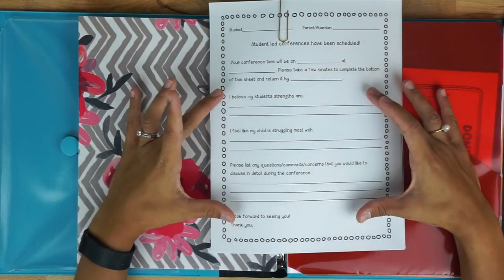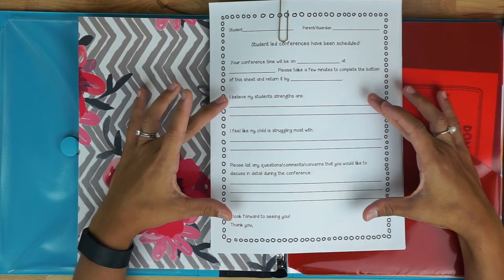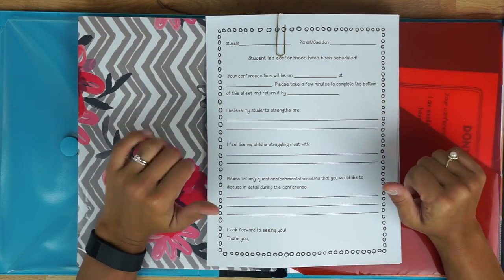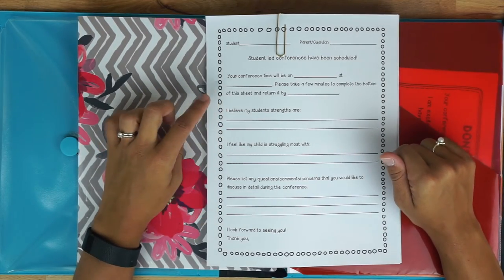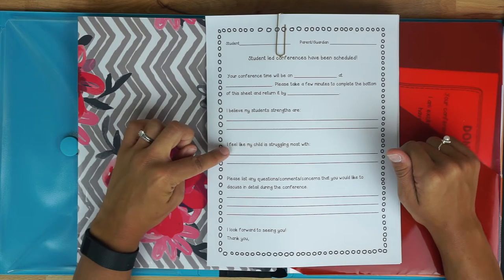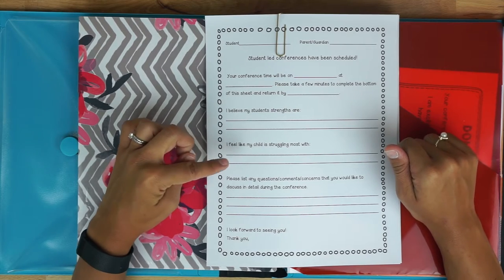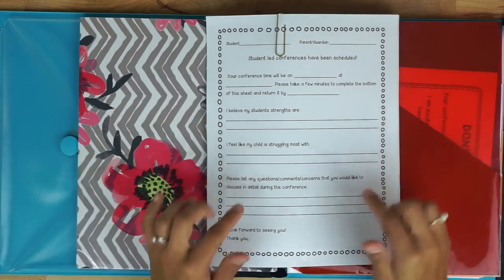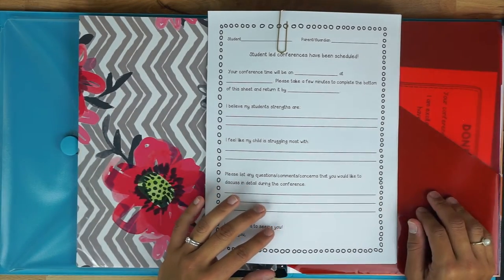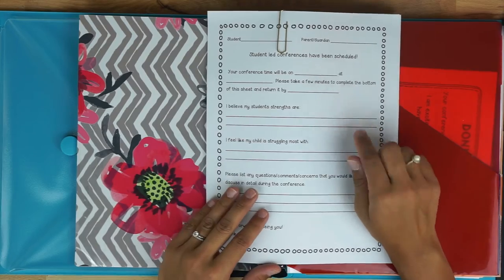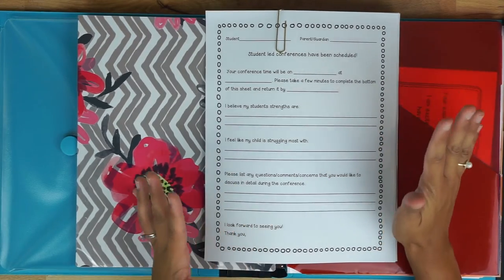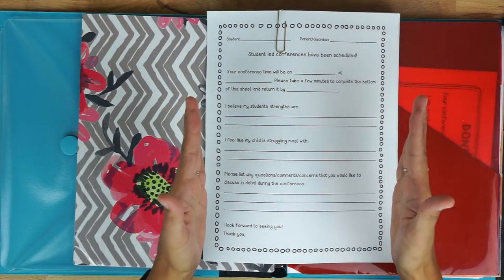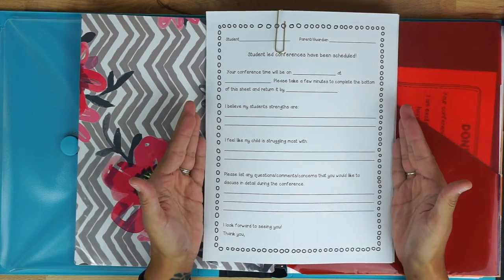So this portion is already going to be filled out. This section is the part that the parents will fill out at home and they will send this back to me. So all it is is just a quick my students strengths are, I feel like my child is struggling most with, list of any comments questions or concerns that they would like to discuss in detail and then I would already have that signed at the bottom. So this would come back to me just to help me kind of prepare a little bit better for my conference.